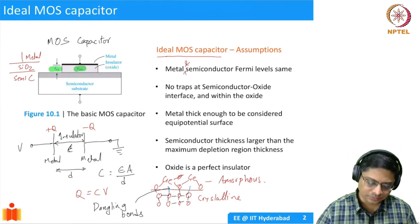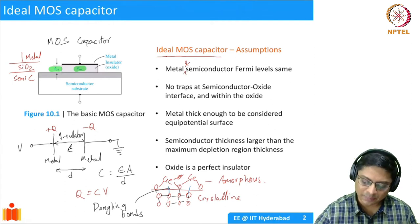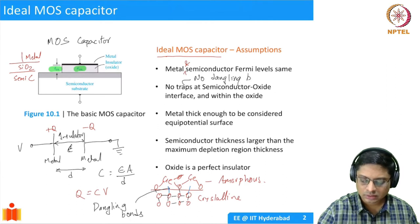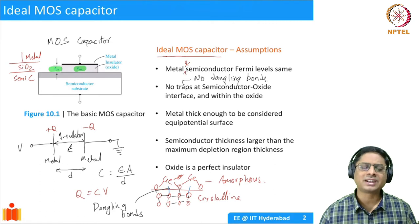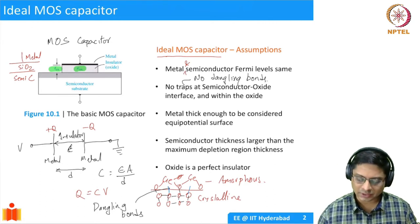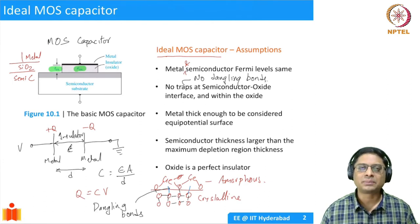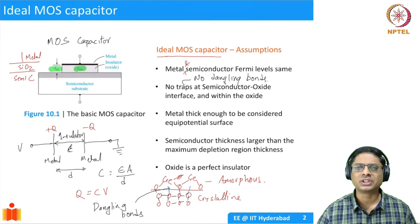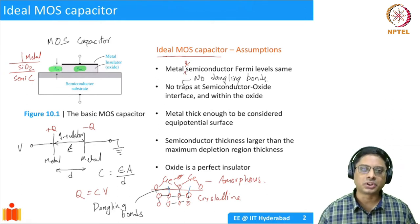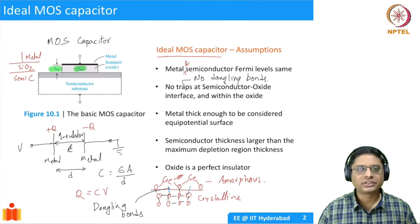It turned out that even though germanium was one of the first semiconductors investigated, the interface between germanium and germanium oxide was not very good. Whereas the interface between silicon and silicon dioxide was extremely good, with very low defect density. For an ideal MOS capacitor, we assume no dangling bonds and no trapped charge in the oxide. This is a reasonable assumption for silicon-silicon dioxide.